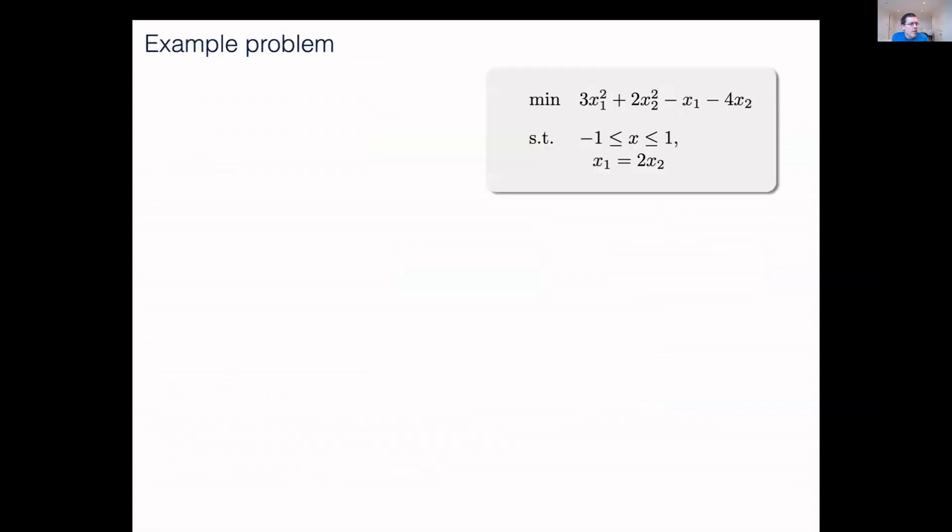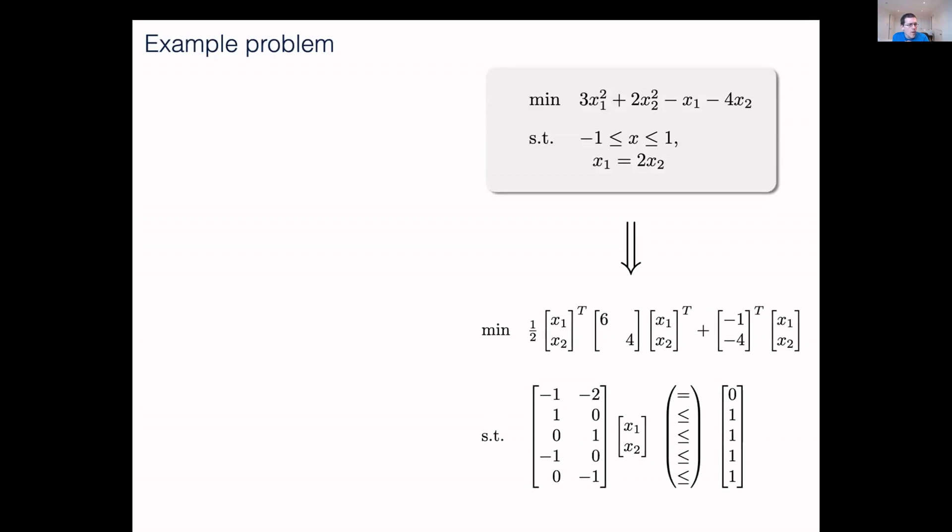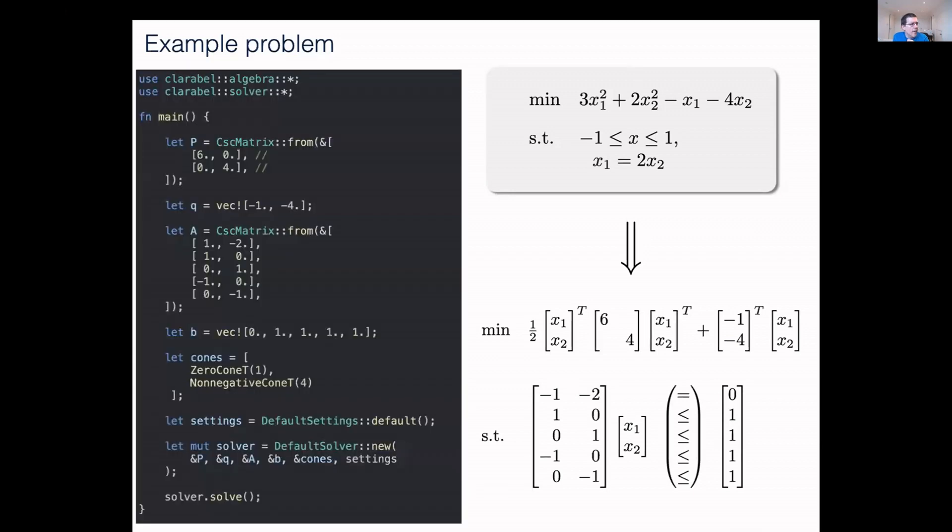I'll briefly show you what it looks like to use this. There's a small optimization problem. We can solve problems with many more variables than this, but that's a two-dimensional optimization problem with some constraints. We first write it in some standard form. We have our quadratic and linear part, and a collection of inequalities in Ax equals or less than b format. You can more or less translate that directly into our API.